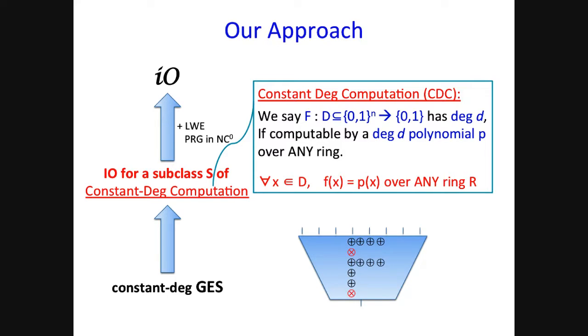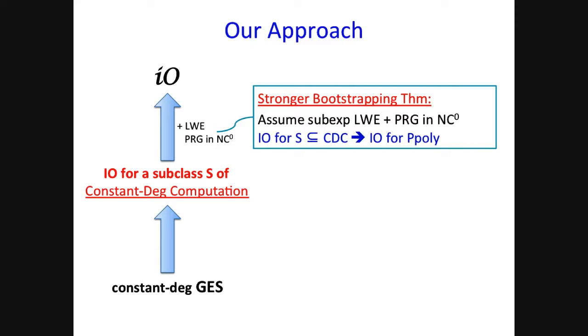Meaning that no matter in which ring you evaluate this polynomial, it will always agree with the Boolean function F on every possible input in the domain. So a constant degree function, you should think of it as being implemented using lots of additions, but only a few layers of multiplication. As you can imagine, such functions are very weak complexity-wise. In particular, if this function is total, meaning that its domain contains all the binary strings of certain lengths, then shown by Nisan and Szegedy, that such function is contained in NC0. However, if the function is possibly partial, then it could be outside NC0, but still contained in AC0.